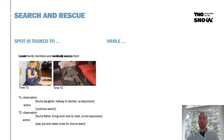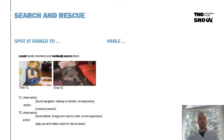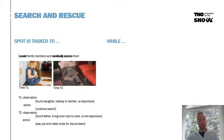Spot is tasked to locate family members and to apply medical assistance. This means that at some point he will report back to the commander, saying that at time T1 he has found the daughter of the family, who is in good health, somewhere between the kitchen and the hall. While at time T2, he found the father of the family, who is not responsive, lying on the floor somewhere in the living room.